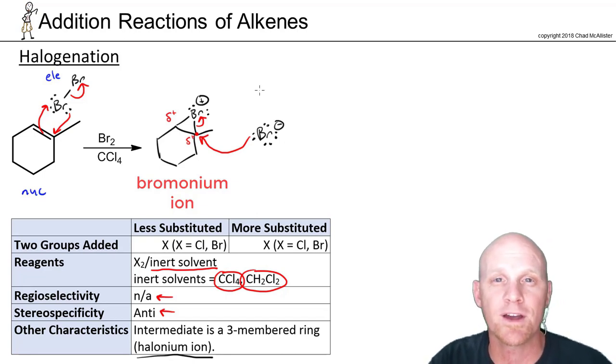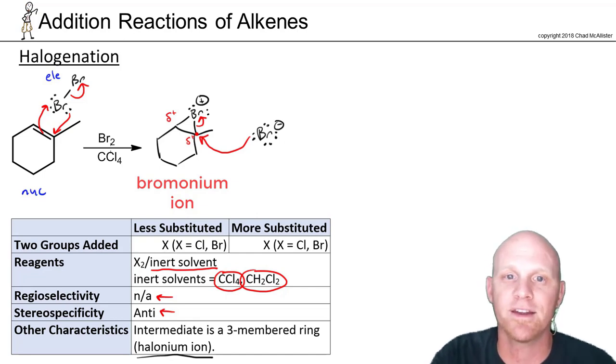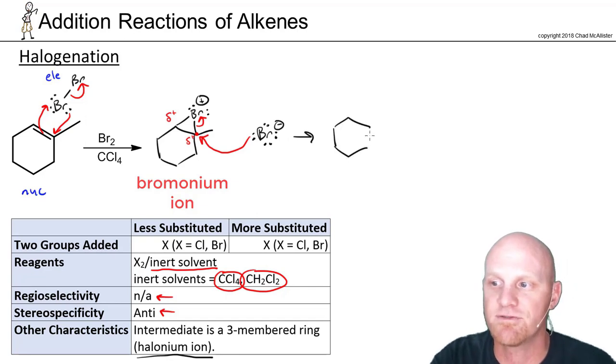When you do backside attack on a three-membered ring, you always attack from the opposite side of the other member of that ring. In this case, the two bromines are going to end up on opposite sides in the product. They are added to opposite faces, net result. We're going to have a bromine here, and we're also going to have added a bromine here.